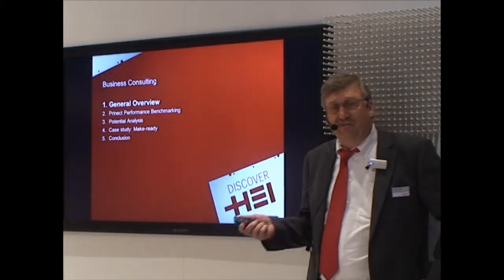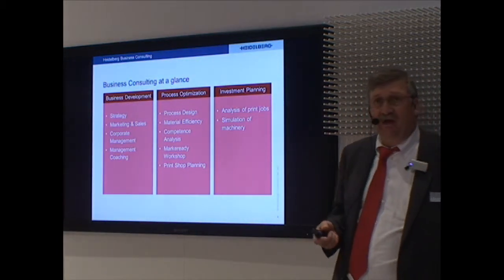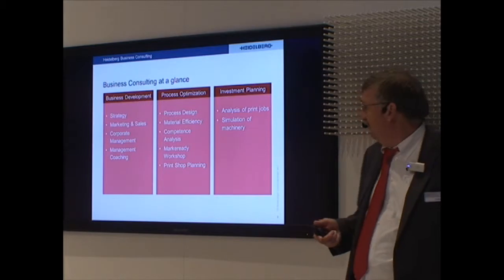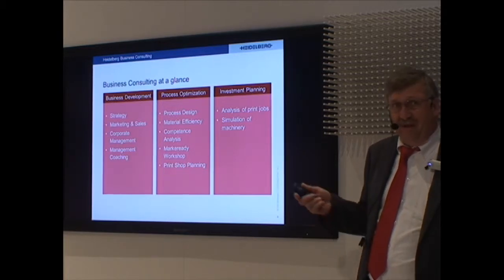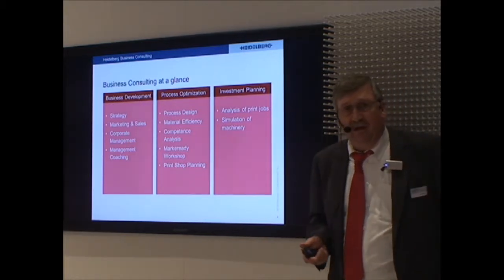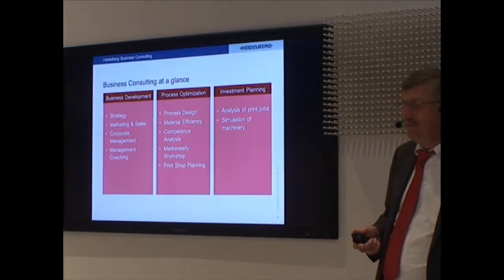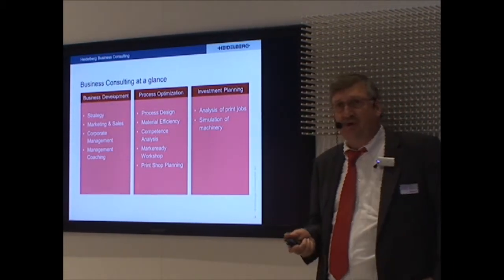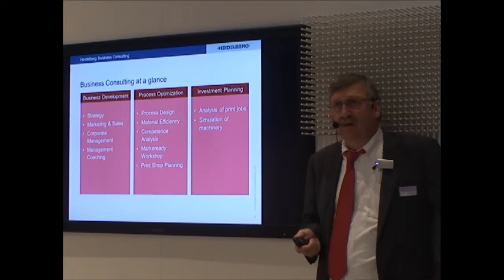First I'll give you a general overview of what we at business consulting offer. We have three columns. One of them is the business development column where we do marketing and strategy and management coaching. The second column is the process optimization which will be the main topic of today with process design, material efficiency, competence analysis with make readies and print shop planning. And the third column is the investment planning where we help you over a structural analysis of your print jobs to invest into the best machine for your company.